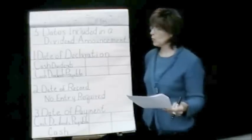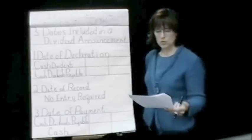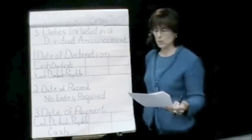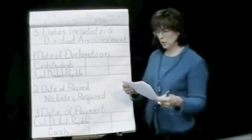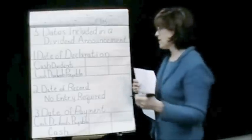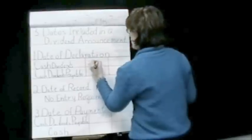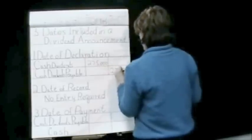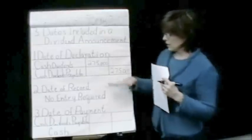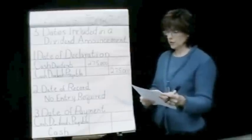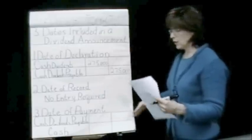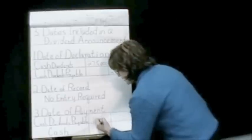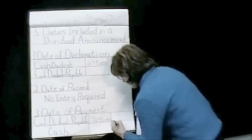Let's go through a simple problem. The date of declaration and payment dates in connection with a cash dividend were June 1, July 1, and August 3. On the date of declaration, June 1, we debit cash dividends for $275,000 and credit cash dividends payable for $275,000. On the date of record, July 1, no entry is required. On the date of payment, August 3, we debit cash dividends payable for $275,000 and credit cash for $275,000.